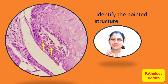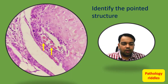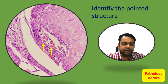This is an easy one. Identify the pointed structures again. The pointed structures here are actually muscle bundles. These muscle bundles have been infiltrated by squamous cell carcinoma cells which are surrounding the whole muscle bundle.